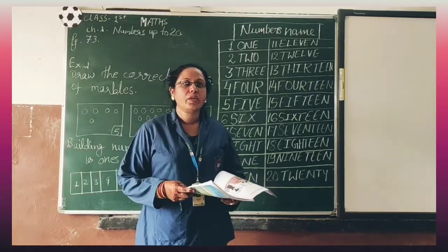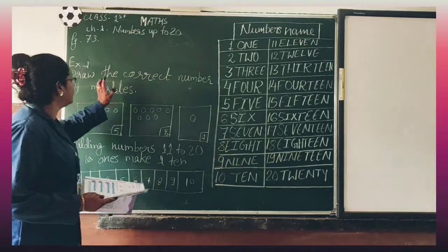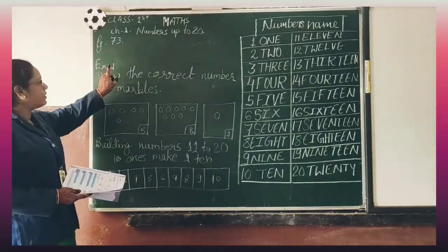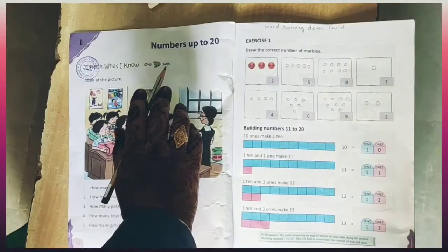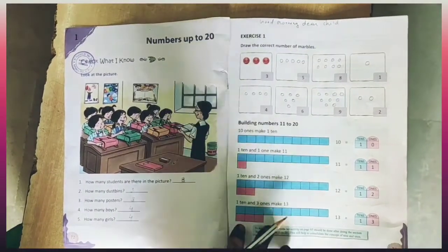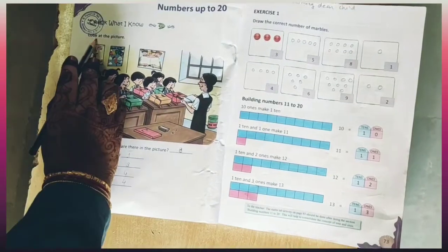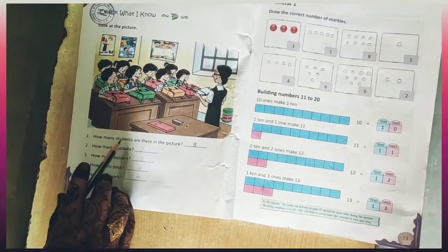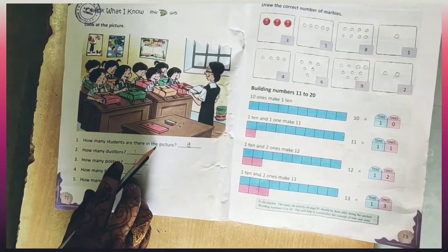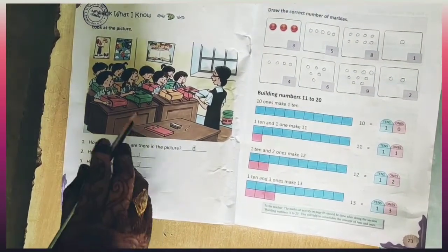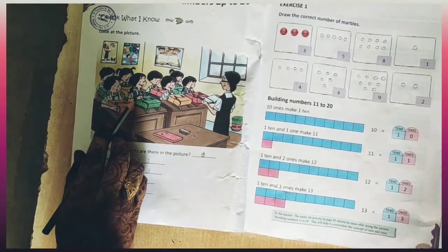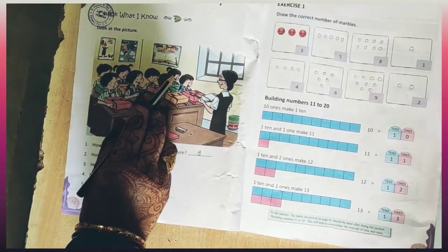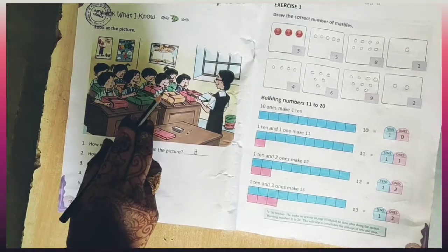Look at the picture here. First, how many students are there in the picture? Count it: 1, 2, 3, 4, 5, 6, 7, 8. Total is 8.